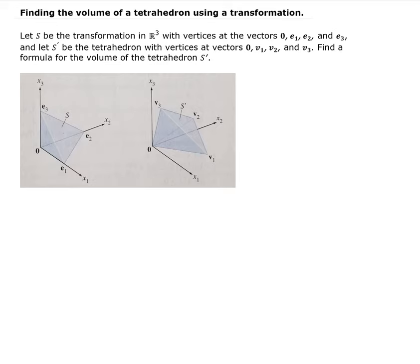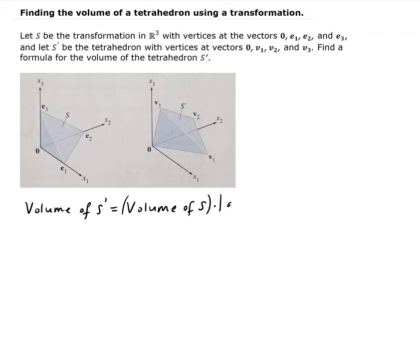We can do that by knowing the volume of S and then finding the determinant of the matrix that does this transformation. So the volume of S prime is equal to the volume of S times the determinant of the matrix that's doing this transformation. Let's call that matrix A.